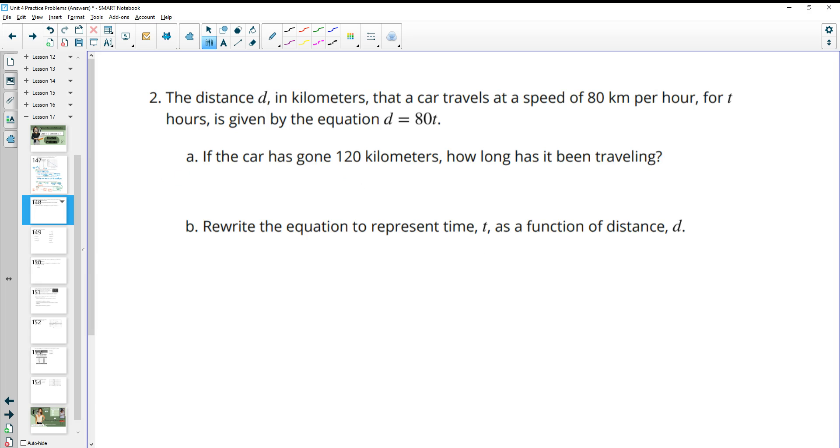Number two, the distance in kilometers that a car travels at a speed of 80 kilometers per hour for t hours is given by the distance equals 80 times t. If the car has gone 120 kilometers, how long has it been traveling? So now we have 120 equals 80 times the time. So we would just divide by 80, and that would give us 1.5 hours for how long the car has been traveling.